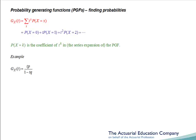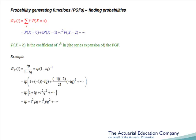Let's have a look at an example. Suppose we take the PGF derived in our first example, which is tp over 1 minus tq. To obtain the probabilities, we need the series expansion of this PGF. Writing this in a more convenient form, that's tp times 1 minus tq all to the minus 1. Expanding 1 minus tq to the minus 1 using the binomial expansion given in the tables, we get tp times 1 plus tq plus t squared q squared and so on. Multiplying this out gives us our series expansion.